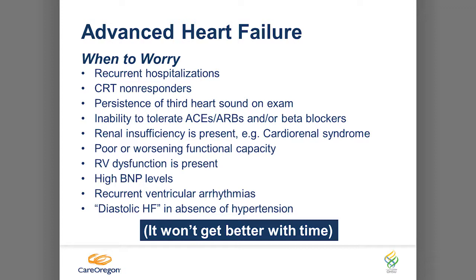You start down-titrating drugs. Their kidneys get so much worse that you can't effectively diurese them or keep them on the right drugs. Maybe you have to take their ACE off because their creatinine is now 2.5 — you switch them to hydralazine and nitrates. Their functional capacity is worse, their right ventricle gets worse, high BNP levels, recurrent ventricular arrhythmias. When somebody is end-stage heart failure, they start having a lot of V-tach and V-fib. And if the patient has diastolic heart failure — heart failure with preserved EF from hypertension — and all of a sudden they're not hypertensive anymore, bad things are going to start happening. That heart has started to get big and the patient is going on the other side of it.